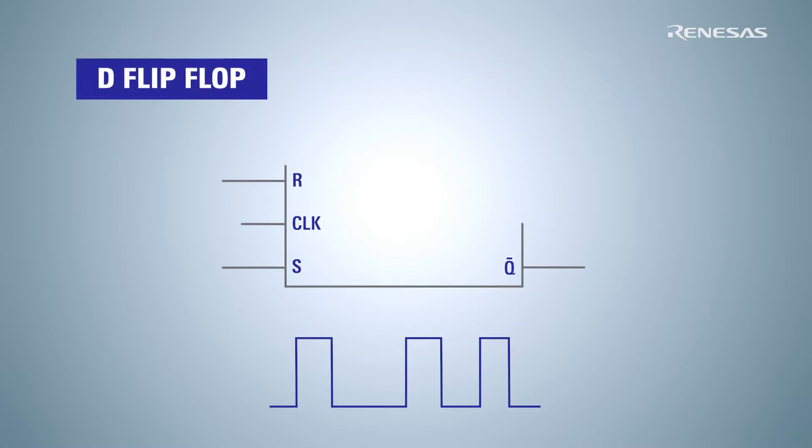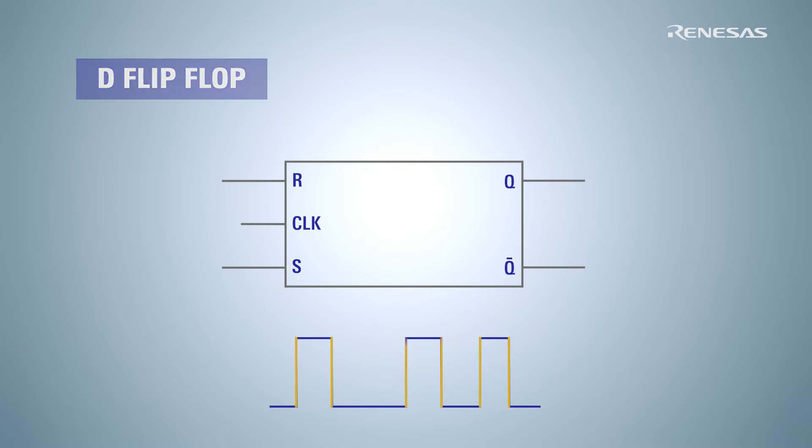A data flip-flop or DFF captures the digital one or zero value of the D input at the edge of the clock and holds the value as memory.